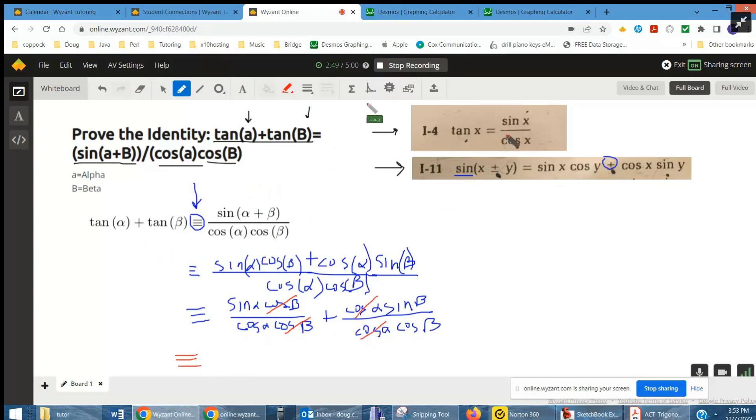Now we can use this identity to say that sine over cosine of an angle equals the tangent of that angle. So sine alpha over cosine alpha is the tangent of alpha, plus tangent of beta.